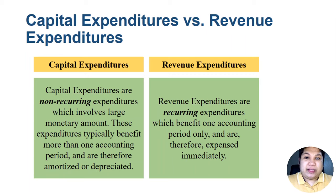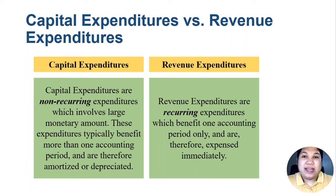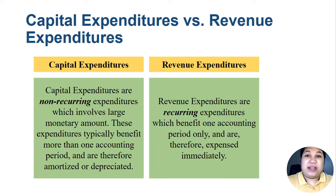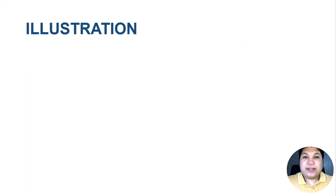The treatment is not the same. Capital expenditures are capitalized — we recognize them as an asset and subject the asset to depreciation or amortization. Revenue expenditures are expensed immediately in the accounting period where they provide benefit. That is the key difference between capital and revenue expenditure.